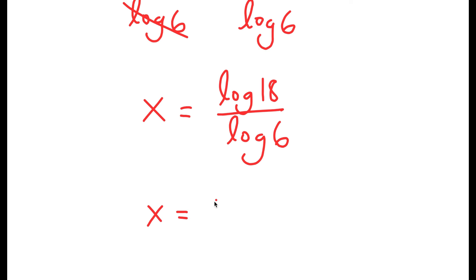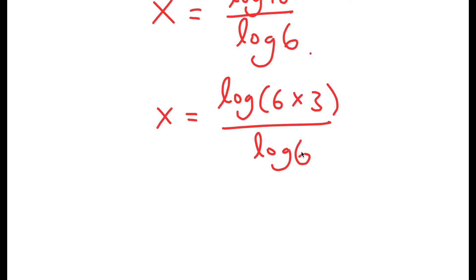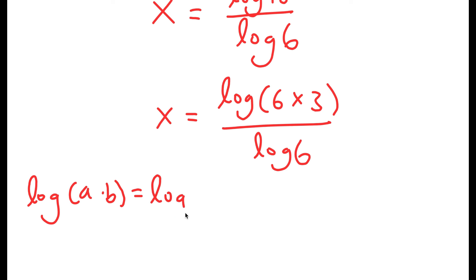Now this turns into log of 6 times 3 over log of 6. So all I did was rewrite log 18 as log of 6 times 3. And now from here, I'm going to use the property of logarithms — if I have something in the form log of a times b,